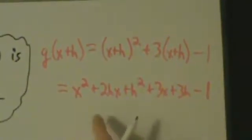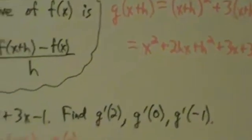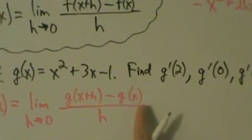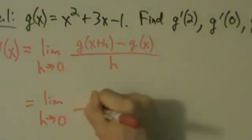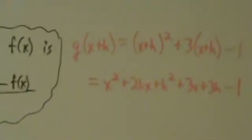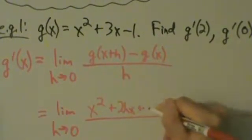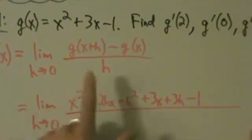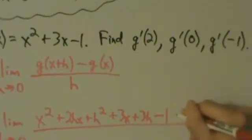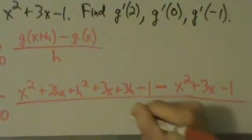Now let's see if there's anything to simplify or combine. There isn't much, but that's okay — we just have x's and h's rather than numbers. Now we plug into the limit: the numerator is g(x+h) minus g(x), so that's x² + 2hx + h² + 3x + 3h − 1, minus g(x). And g(x) is x² + 3x − 1, all divided by h.